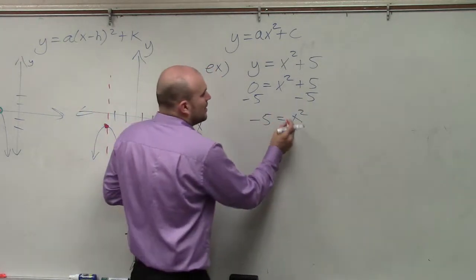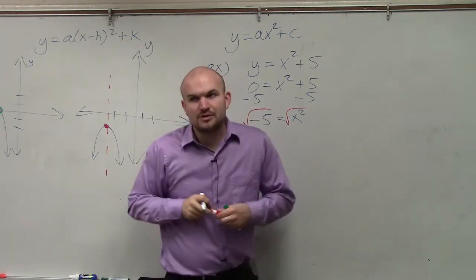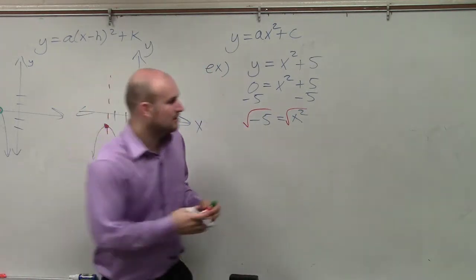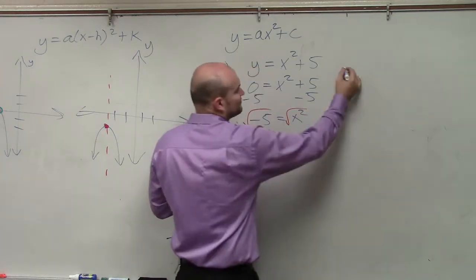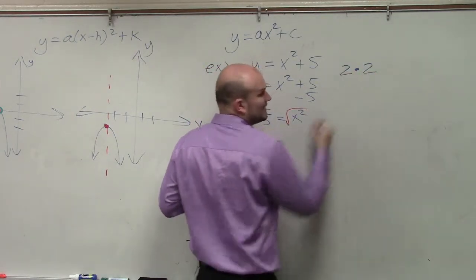Take the square root. But the problem is, think about what two numbers multiply to give you a negative number. Well, let's just think about this for easy numbers.